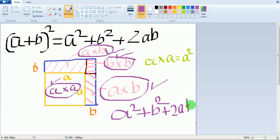Hence the proof. That's the reason why we call (a+b)² equal to a² + b² + 2ab. Thank you for watching this video.